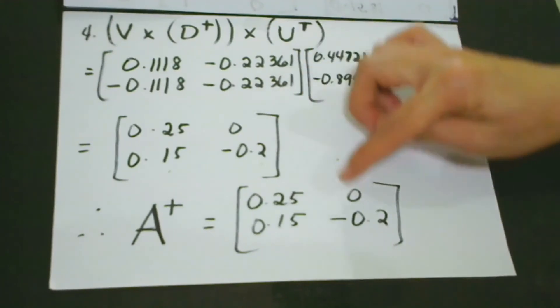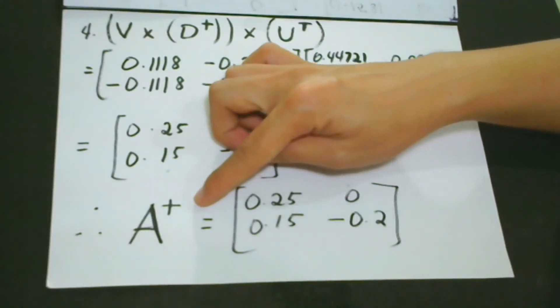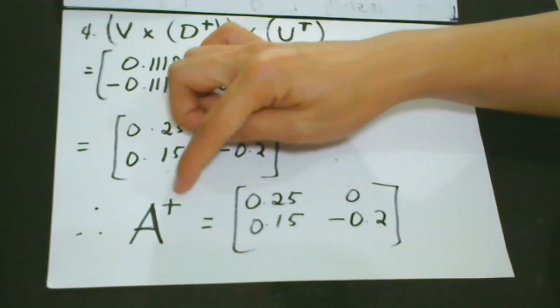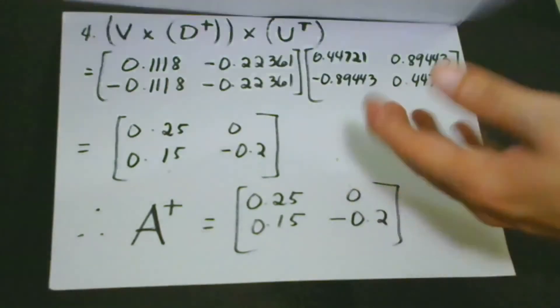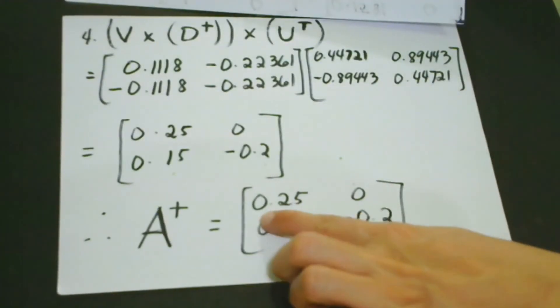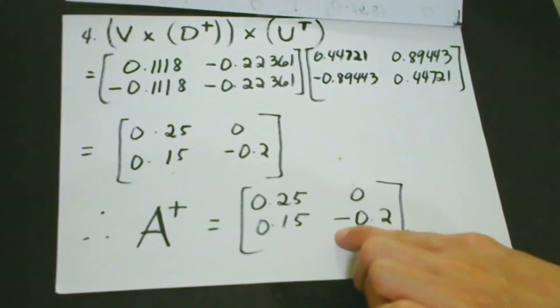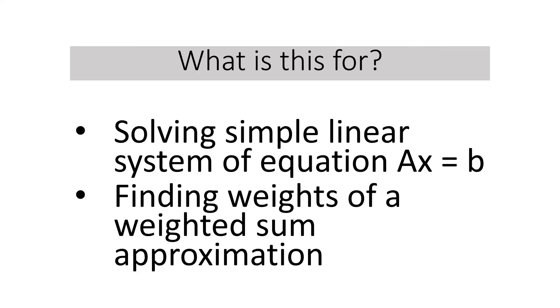This is actually what we call the Moore pseudo-inverse. So, the Moore pseudo-inverse of A, which used to be 4, 3, 0, negative 5, is now 0.25, 0, 0.15, and negative 0.2. What is this for? Why do we have to study this?